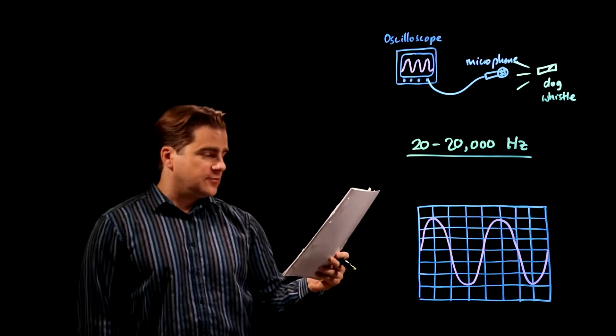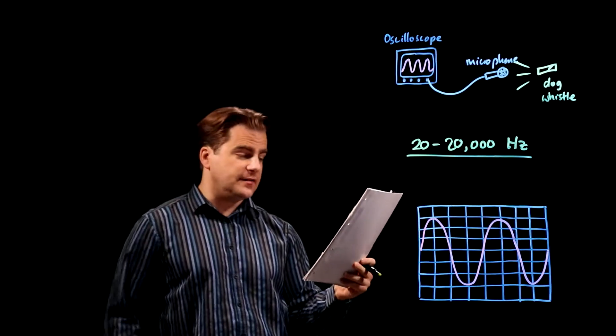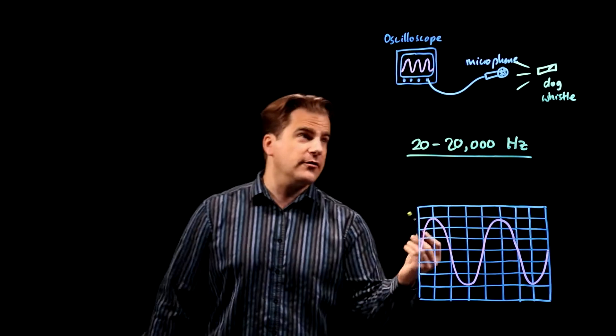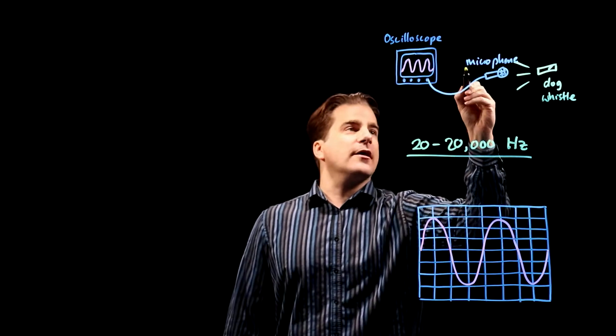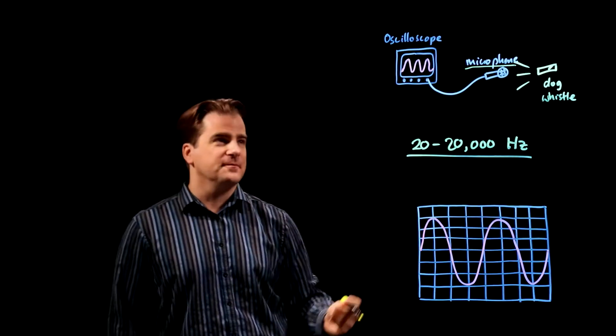The student uses an oscilloscope to display the sound wave. Name the other piece of apparatus the student would need to display the sound wave. One mark. Well, I've already mentioned it, you've got to have a microphone if you're going to display a sound wave.